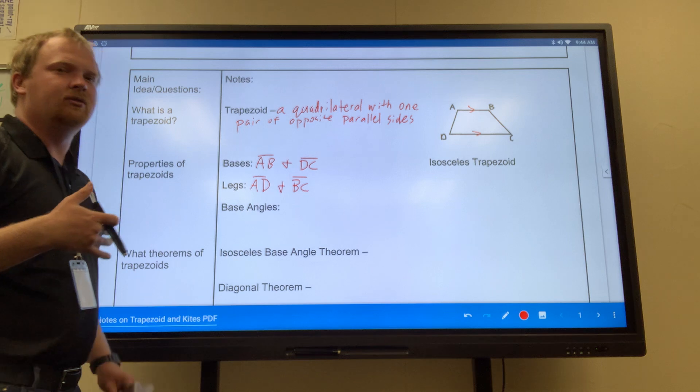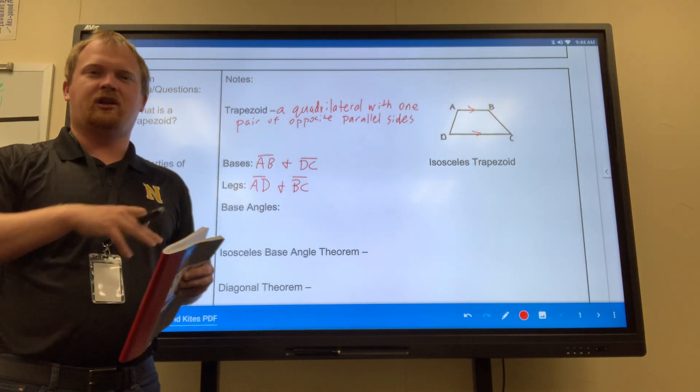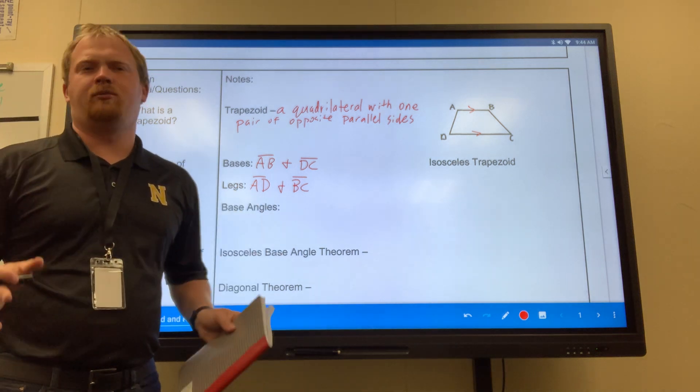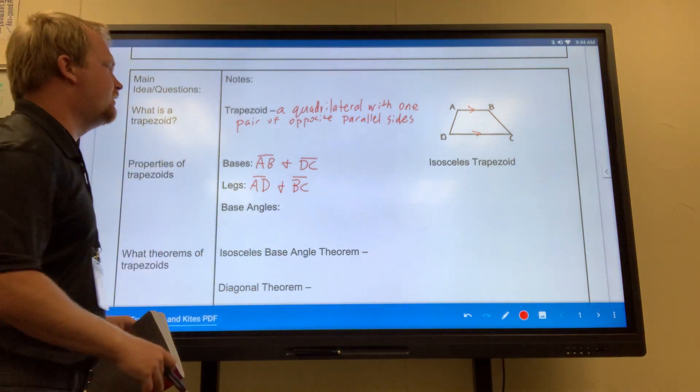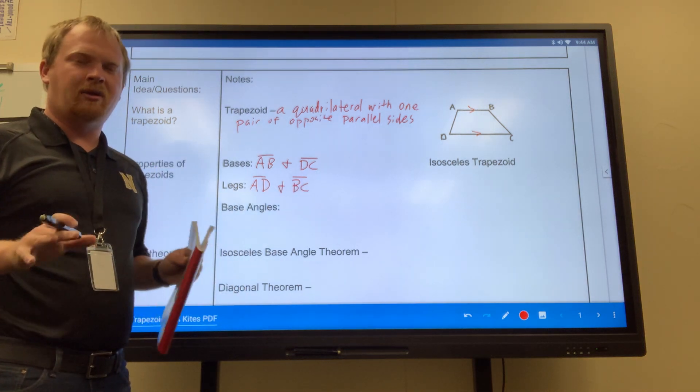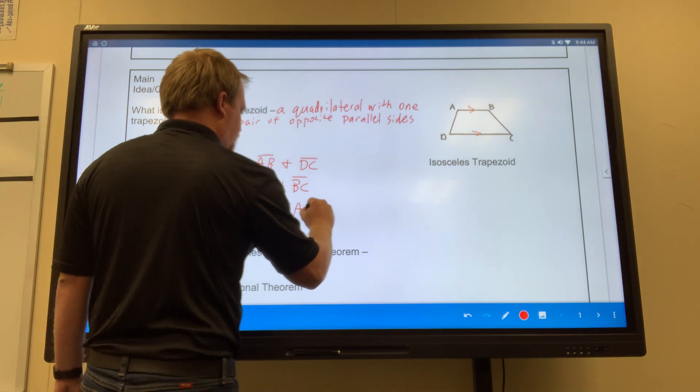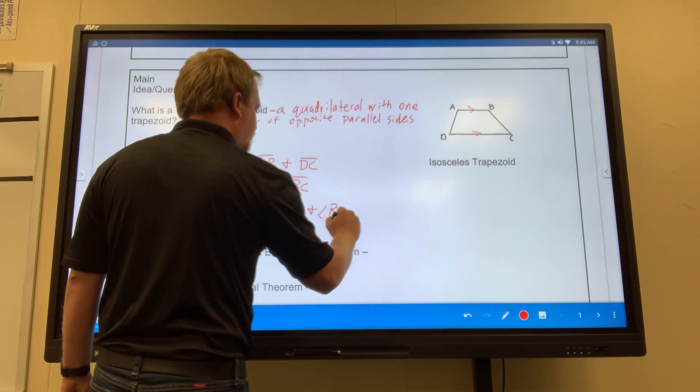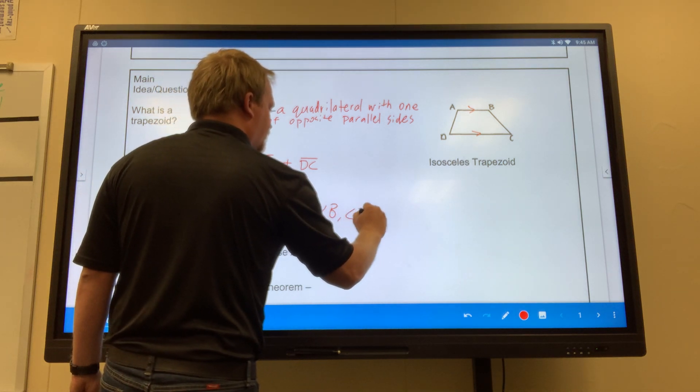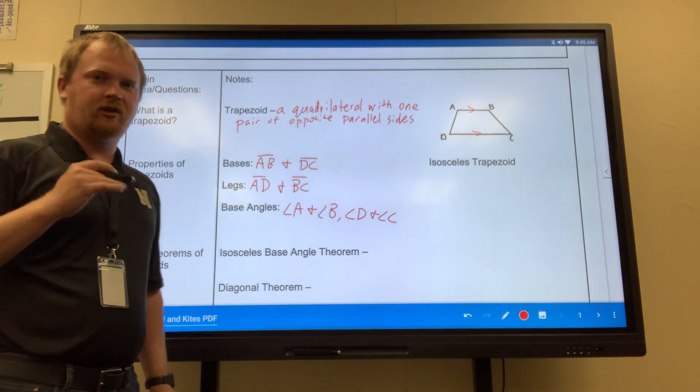Now, what about the base angles? We have to look at those as pairs. We can't just look at all four of them and say all four of them are the base angles. No. Looking at the pair of angles, angle A and angle B, as well as angle D and angle C. Those are my base angles.